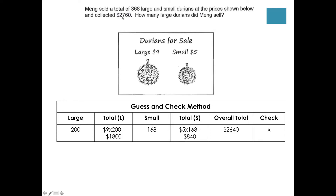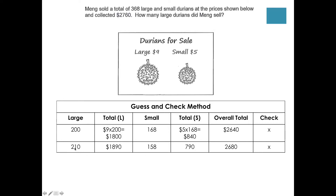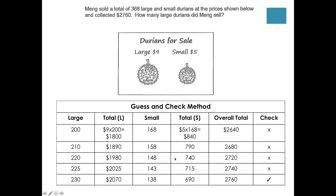Do you meet your target? No, because the targeted collected amount is $2,760. So for this guess you put a cross and need to make another guess. The student might then guess 210 large durians, so small durians would be 368 minus 210, giving 158, and the total comes to $2,680 — still not reaching $2,760. The student will go on guessing and checking until finally arriving at 230 large durians and 138 small durians, which meets the requirement of $2,760 overall total.